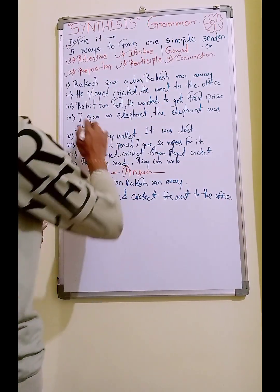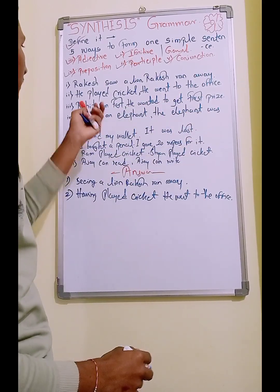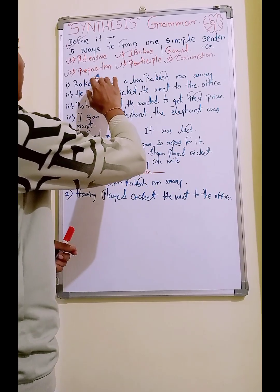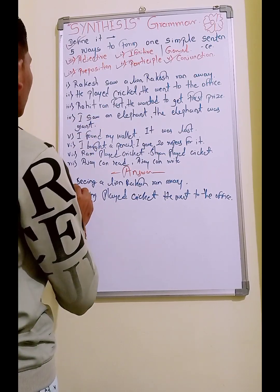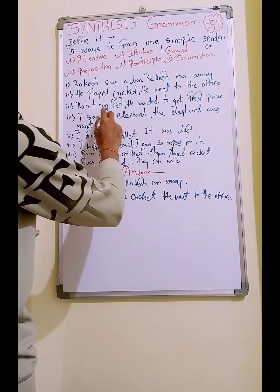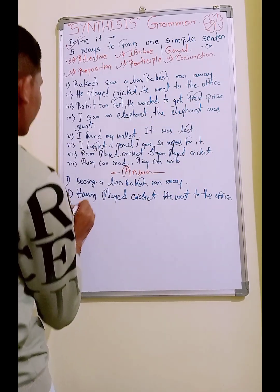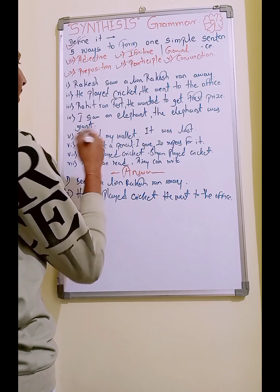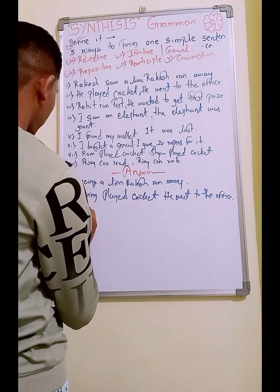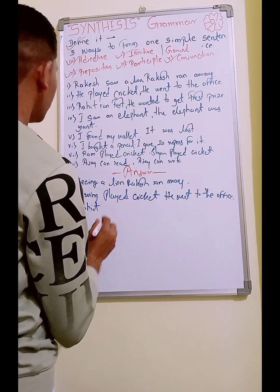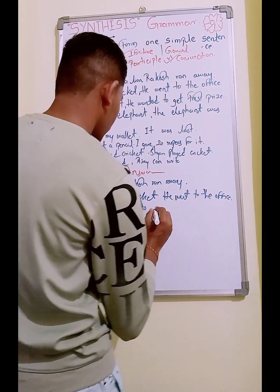Third one: 'Rohit ran fast. He wanted to get first prize.' This is very simple — you can't add a preposition or conjunction here; you have to add an infinitive. The answer is: 'Rohit ran fast to get first prize.'